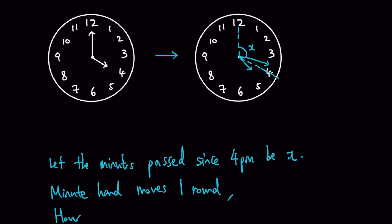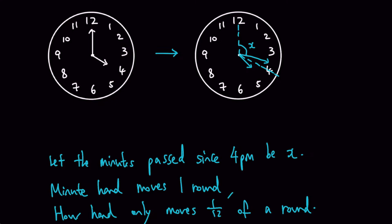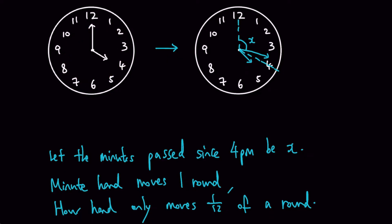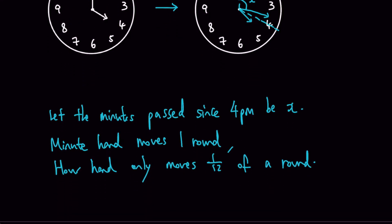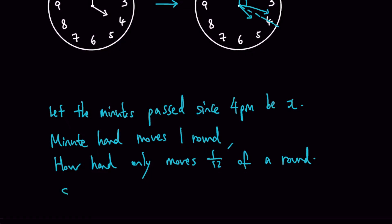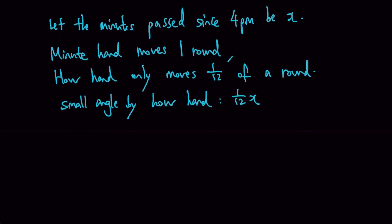The hour hand only moves one twelfth of a round. For example, from 4 o'clock to 5 o'clock, the hour hand moves from number 4 to 5 while the minute hand moves through all 12 numbers. This means the hour hand moves one twelfth of a round, and its angle will be one twelfth of x minutes.